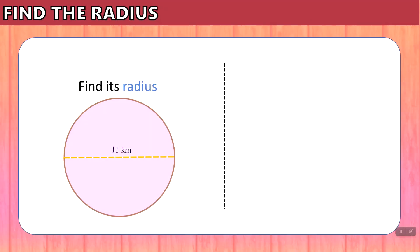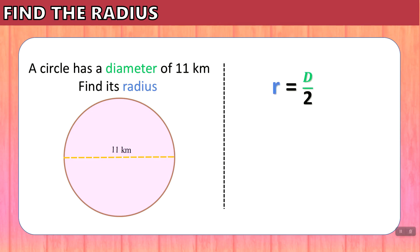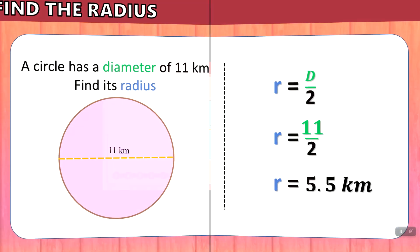How about this one? A circle has a diameter of 11 kilometers — find its radius. Again, we use the formula R equals D divided by 2. We substitute D for 11, because that is the diameter that is shown. And we have 11 divided by 2, which is 5.5 kilometers. The radius is 5.5.